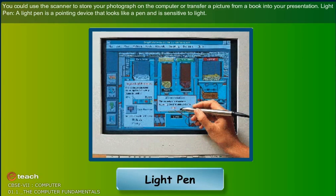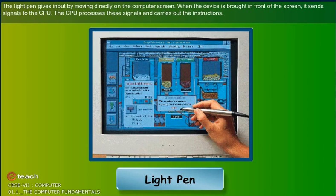Light pen: A light pen is a pointing device that looks like a pen and is sensitive to light. The light pen gives input by moving directly on the computer screen. When the device is brought in front of the screen, it sends signals to the CPU. The CPU processes these signals and carries out the instructions.